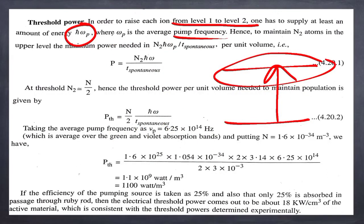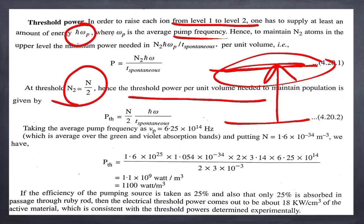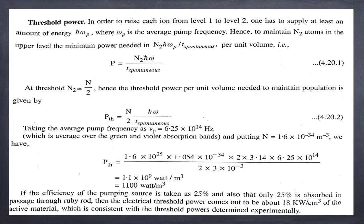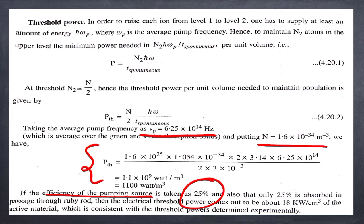At threshold, N₂ = N/2, so the threshold power per unit volume is P_threshold = (N/2) · ℏω / τ_spontaneous. Substituting νp = 6.25×10¹⁴ Hz and N = 1.6×10³⁴ m⁻³, we get P_threshold = 1100 W/m. Assuming 25% pump source efficiency and 25% absorption in the ruby rod, the electrical threshold power is 18 kW/cm³, consistent with experimental results.